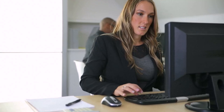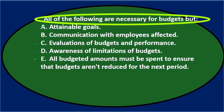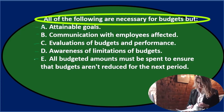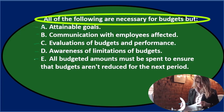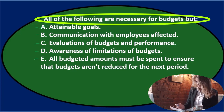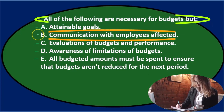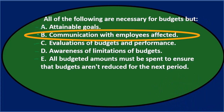Let's go through this one more time. All the following are necessary for budgets, but — we're looking for the one that doesn't fit, possibly the one that would be improper. B says communication with employees affected — you could argue it's not necessary, but I would think that'd be a good practice and probably part of the budgeting process.